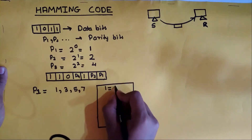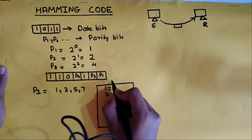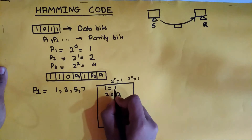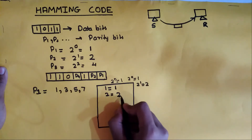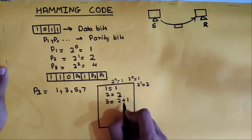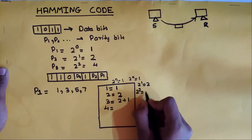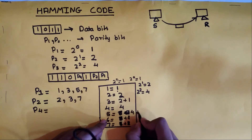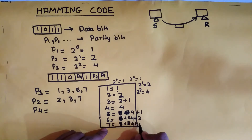In the split method, we split each position number into its powers-of-2 components, treating 1, 2, and 4 as constant elements that cannot be split further. So 1 stays as 1, 2 stays as 2, 3 splits as 2+1, 4 stays as 4, 5 splits as 4+1, 6 splits as 4+2, and 7 splits as 4+2+1.